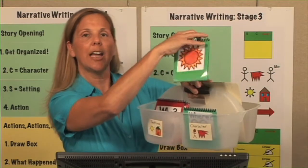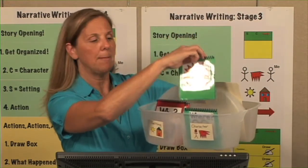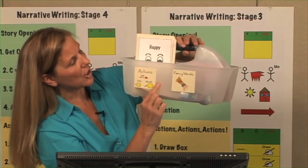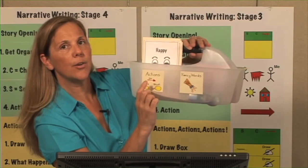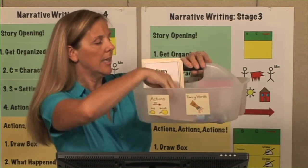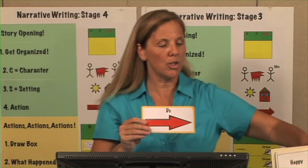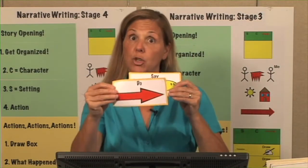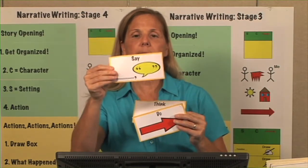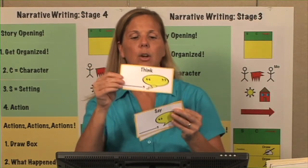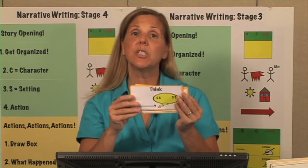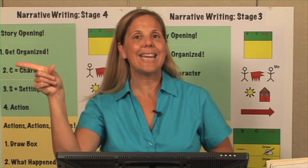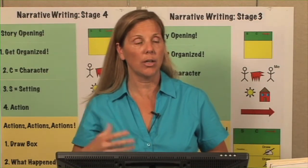You have your 'when' flip books showing different times — for instance, during the summer or a sunny day. On the reverse side of the toolkit you have the part of the story which are the actions, and now the actions are going to be where a character can do, say, or think. You will have three different cards to show the children so you can decide whether the character in the next action box is going to do something, say something, or think something. So now we're adding dialogue into our writing.